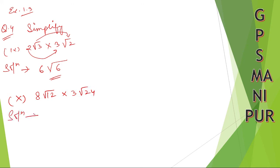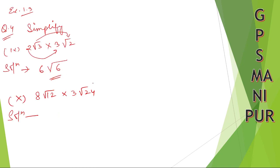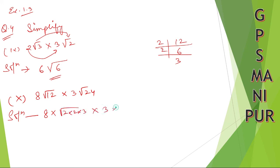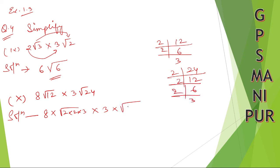Solution — look here. 8 root 12. I can write 12 further: 2 into 6 is 12, 2 into 3 is 6. So it will be 8 into root over 2 into 2 into 3 into 3 into 24. I can write down 24 as: 2 into 6 is 12, 2 into 3 is 6, so 2 into 2 into 2 into 3, giving 2 into 2 into 2 into 3.